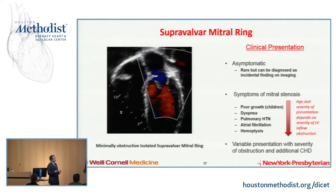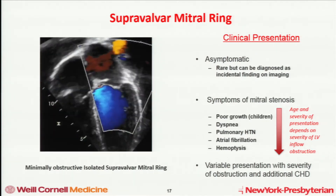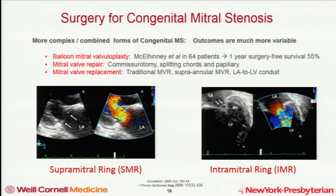This particular echo shows a ring without a huge amount of obstruction or MR — one of the few adult patients who has not been operated on and is doing well. When we talk about isolated mitral rings, surgery is excellent. The published outcomes seem very effective, and a surgeon like Dr. McGilvery can resect this with very little damage to the mitral valve and achieve a really lasting result. The problem is when there are other problems with the mitral valve — if you have more intramitral disease beyond the ring, you often have to do mitral valve repair, commissurotomies, splitting cords, or splitting papillaries, which can be very, very complicated.